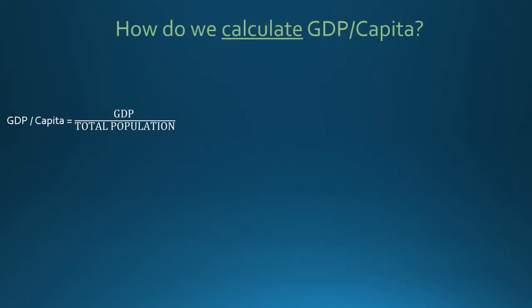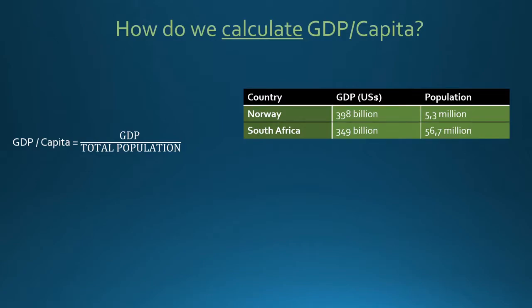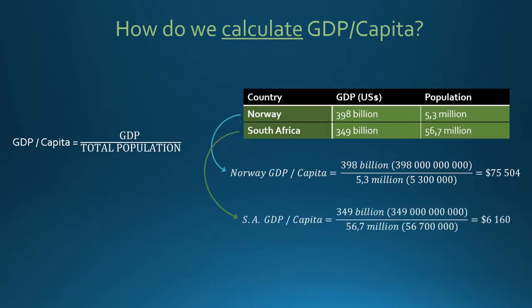To calculate GDP per capita, we use the formula: GDP divided by population. In this example we are going to use South Africa and Norway. Norway and South Africa have roughly similar GDP scores but vastly different population sizes. Norway's GDP of $398 billion divided by her population of 5.3 million shows that the average Norwegian earns roughly $75,000 a year. South Africa's GDP of $350 billion divided by her population of roughly 57 million shows that the average South African earns roughly $6,100 a year. This reveals that either Norway is producing far more goods and services than South Africa, or the goods and services produced by Norway are far more valuable.